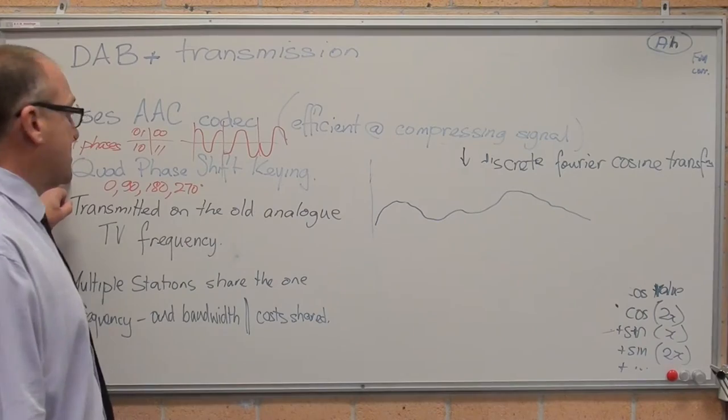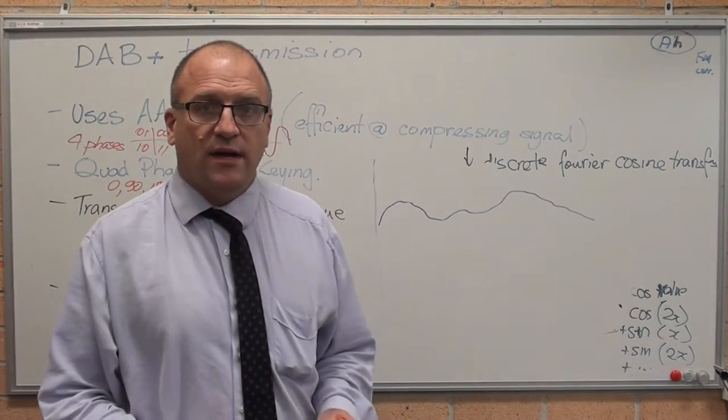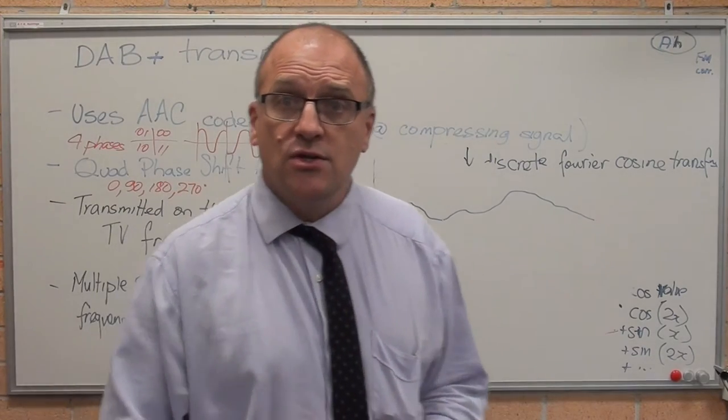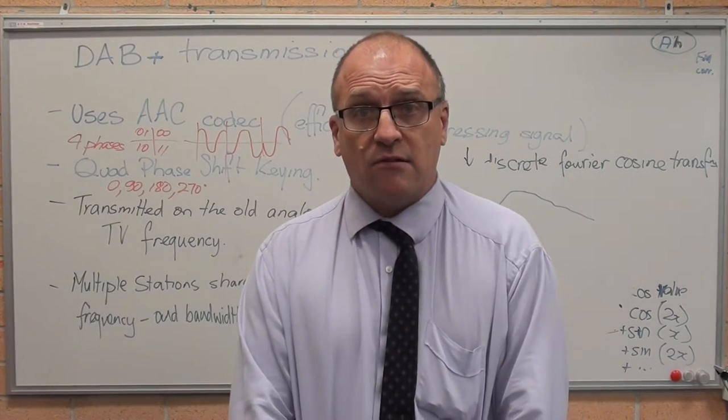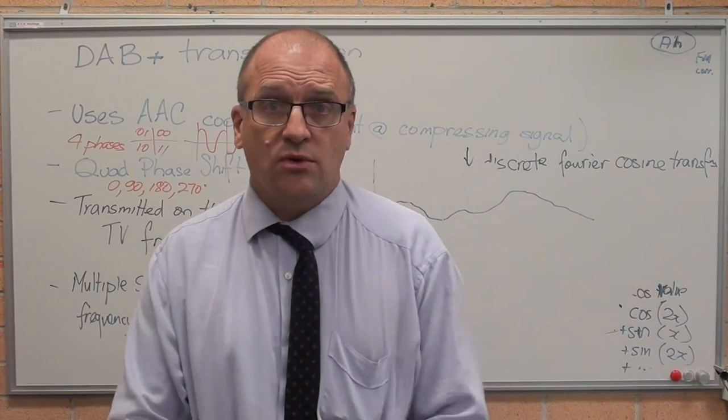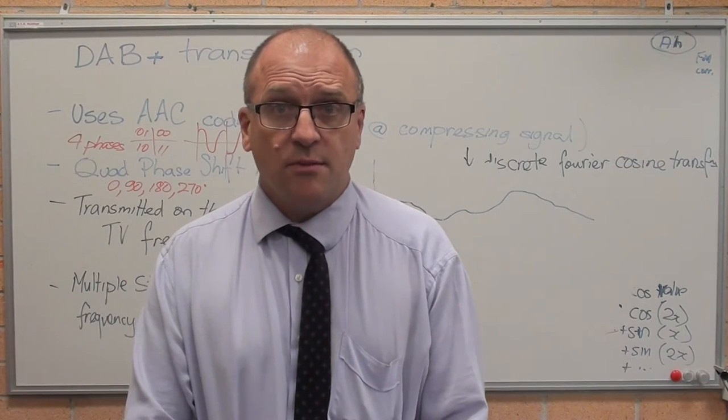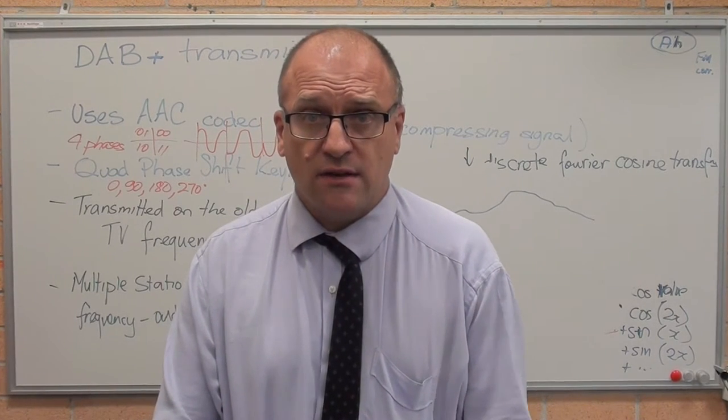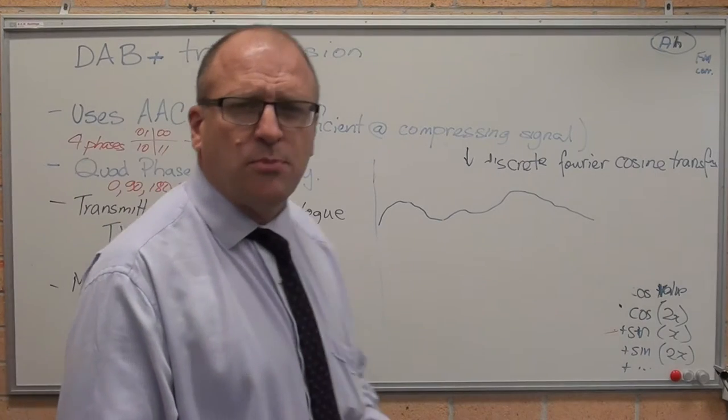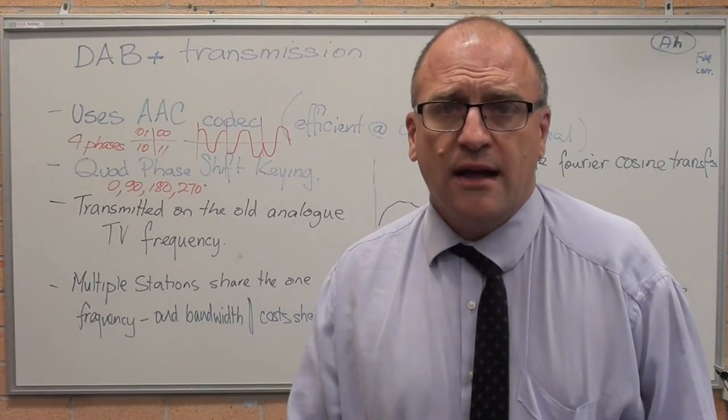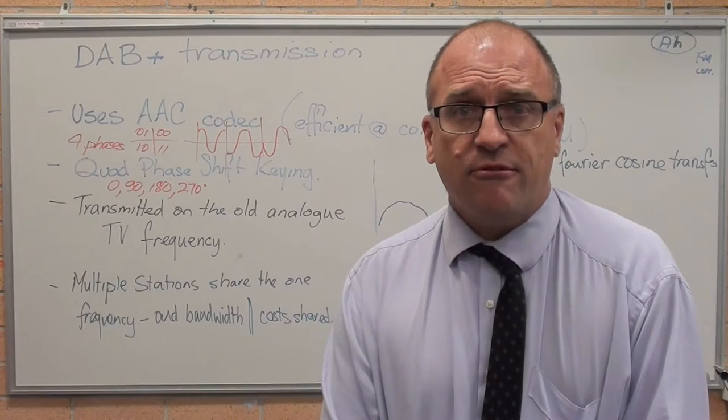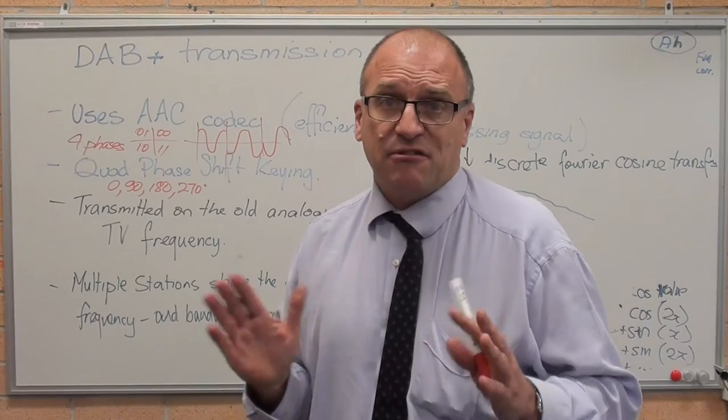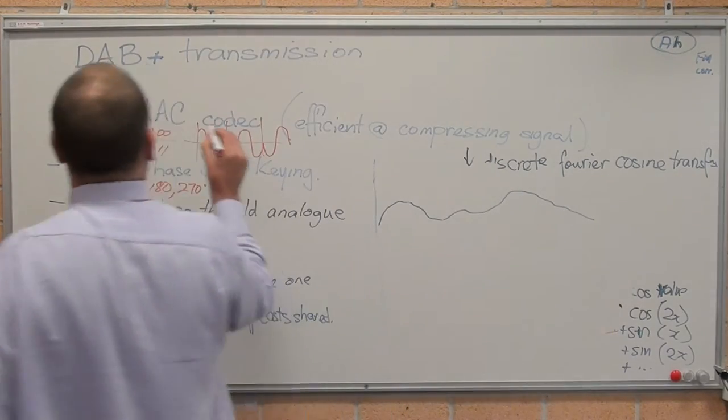So DAB uses quadrature phase shift keying. The reason why you don't have analogue television available in Australia anymore is because it's now being used as the digital broadcast spectrum. There's only so many frequencies available to transmit on and every one of them has a purpose to broadcast digital radio and digital television. The advantage in digital radio is multiple stations. You can have four different stations sharing the same frequency because the packets, data is sent in packets.